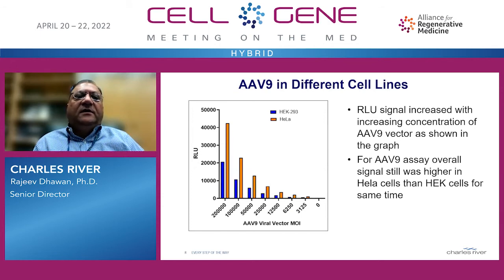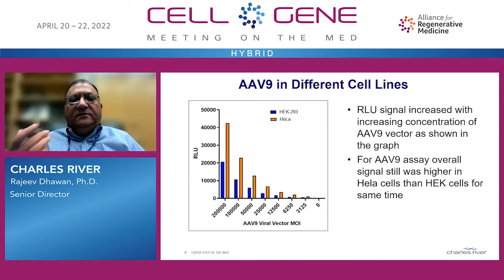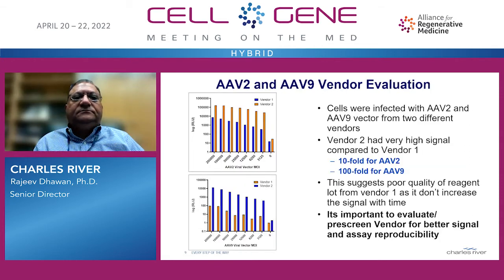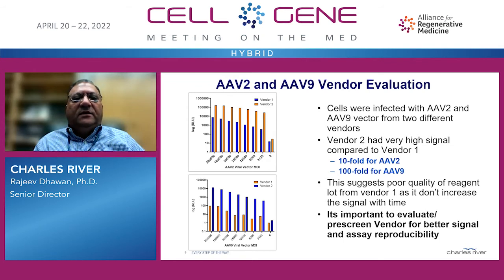Here is some of that data. The graph on the left-hand side shows that the AAV9 vector was incubated with two different cell lines — HEK-293 and HeLa cells — and there is an easily observable two-fold difference between the two cell lines. For vendor evaluation, we purchased AAV2 and AAV9 vectors from two different vendors and ran them on the assay. Vendor 2 had very high signal compared to vendor 1. For AAV2, it was a ten-fold difference in signal, but for AAV9, it was a hundred-fold difference, suggesting poor quality reagent from vendor 1, as signal did not increase with time. It is therefore important to pre-screen vendors for better signal and assay reproducibility.